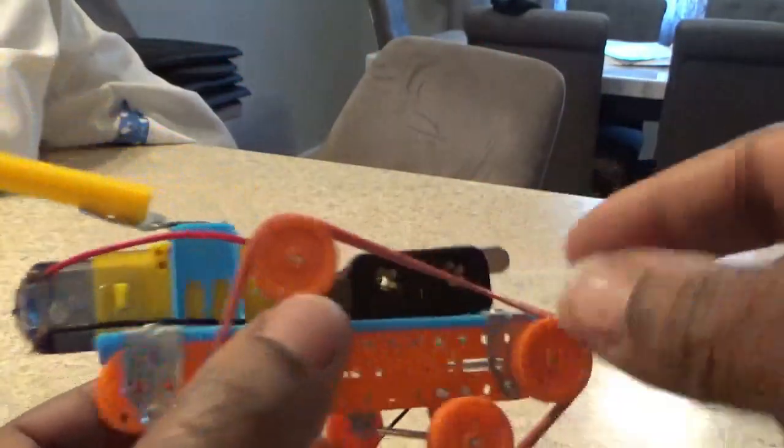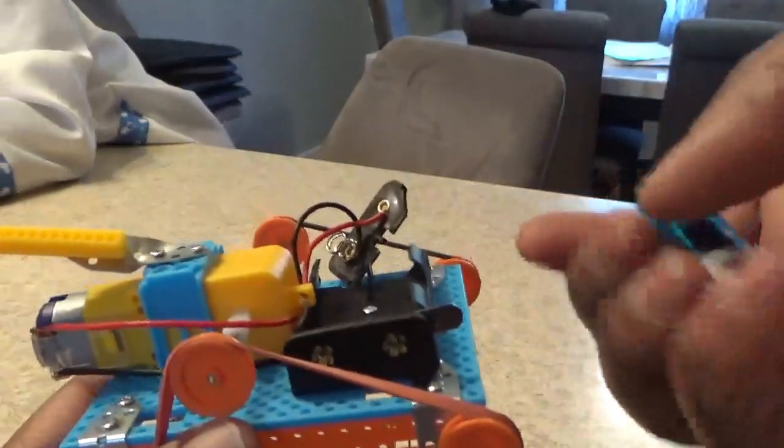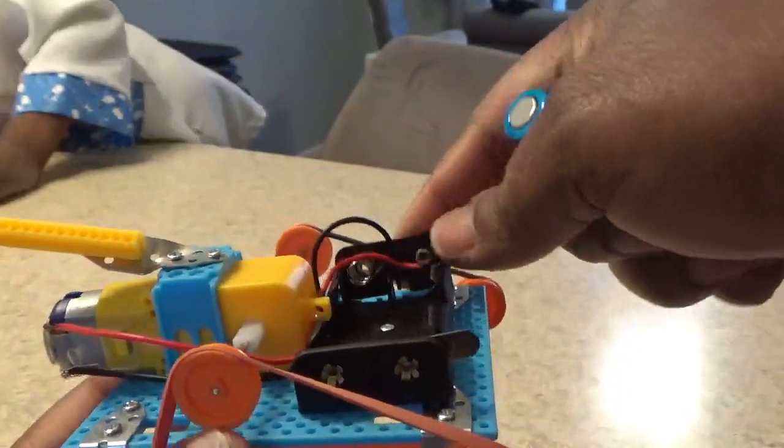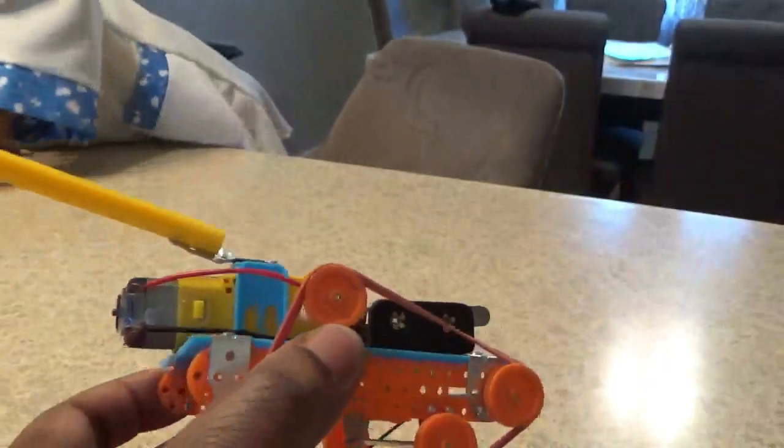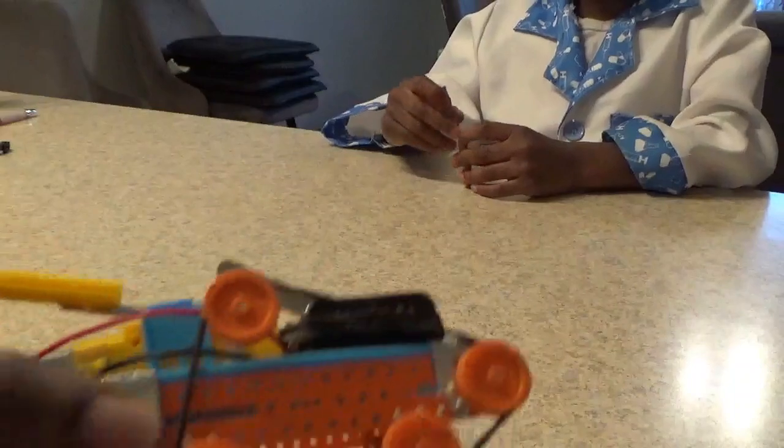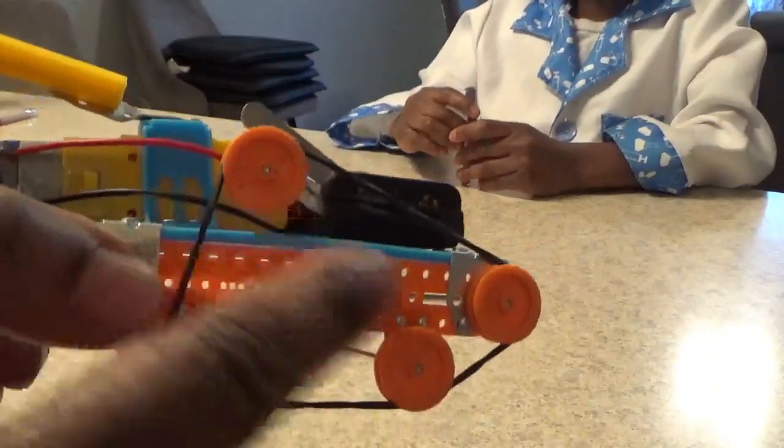On this robot, what we're going to do is add these two double-A batteries and see if we can get this robot moving again. So what we did is put some skinnier rubber bands on the bottom here to get the wheels moving.